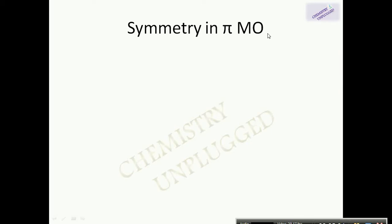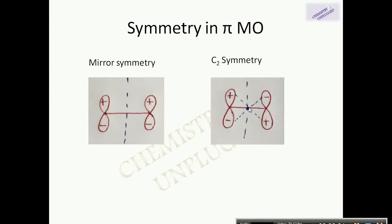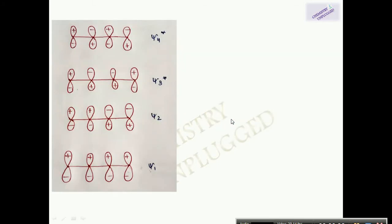Now we will discuss the symmetry of pi molecular orbitals. Pi molecular orbitals have two types of symmetry: mirror symmetry and C2 symmetry. Mirror symmetry is when the two molecular orbitals are mirror images of each other. C2 symmetry, or center of symmetry, is when a line drawn from a point on the molecular axis connects two lobes having the same face — for example, a positive lobe connected to another positive lobe, or a negative lobe connected to another negative lobe.